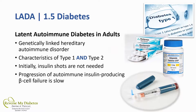Latent Autoimmune Diabetes in Adults — or LADA, also known as Type 1.5 diabetes — is a hereditary autoimmune disorder with characteristics of both Type 1 and Type 2 diabetes. Initially, patients are typically producing their own insulin and are prescribed diabetes medication just like a typical Type 2 diabetic. However, the beta cells in the pancreas fail to produce insulin over time, which can take many, many years.